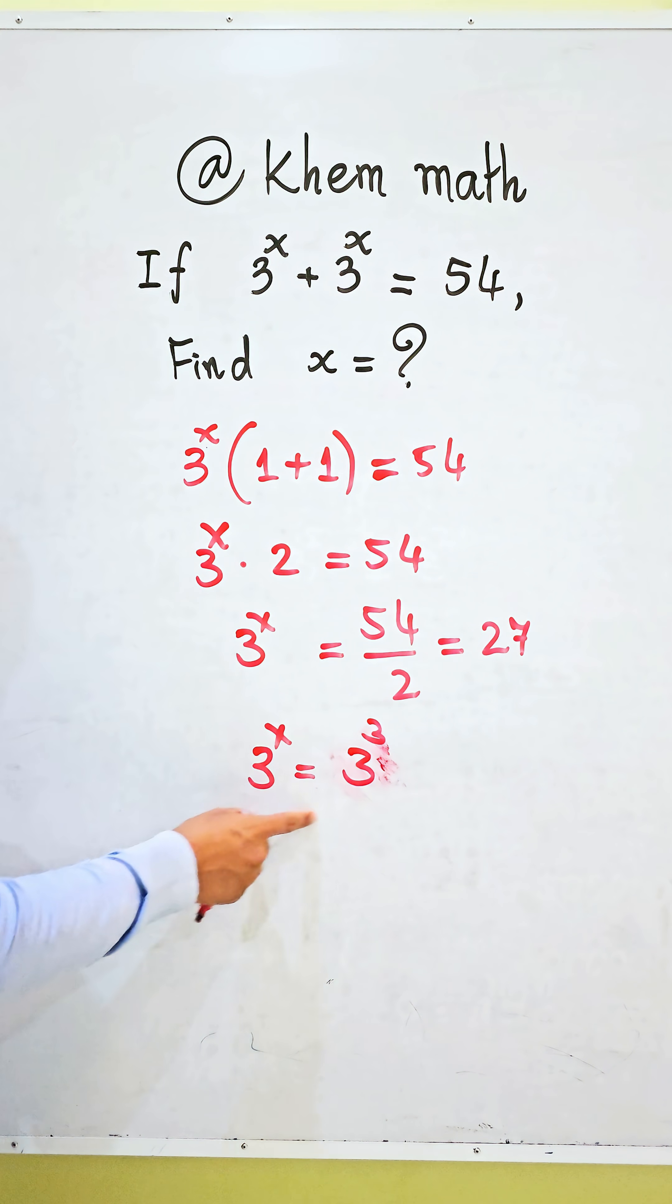So we see they have the same base. So we get exponent equals exponent. We get x equals 3.